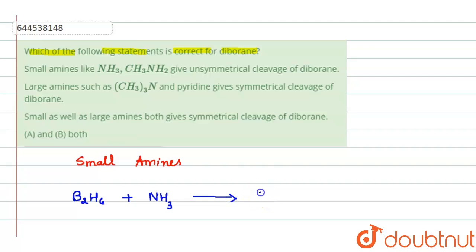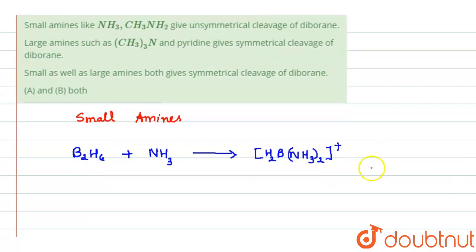It is going to give us a complex like BH2 and then you have NH3, 2 units. So the overall charge is positive and then also it is going to give a negative radical, BH4 minus. So this is going to be unsymmetrical cleavage.